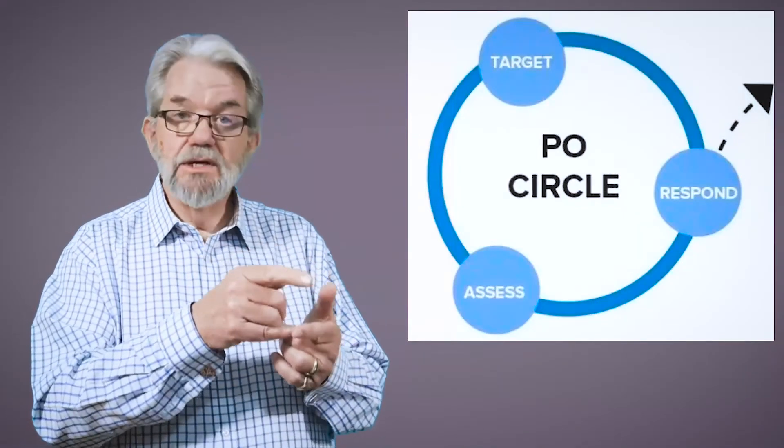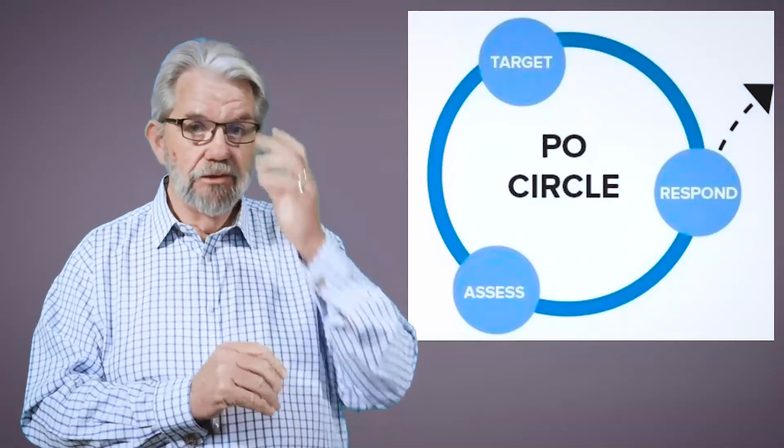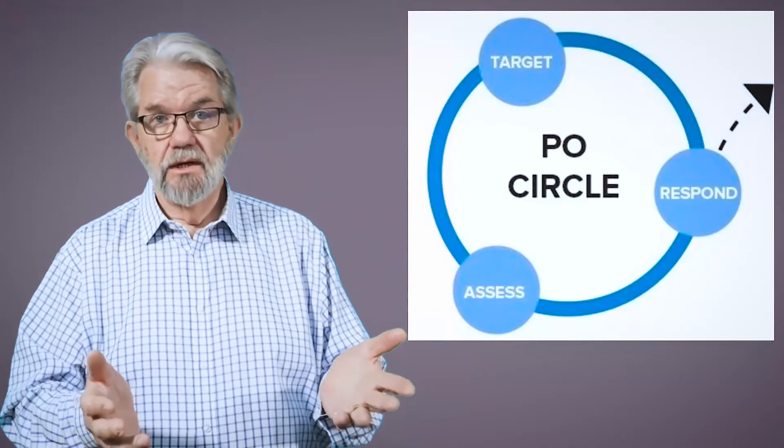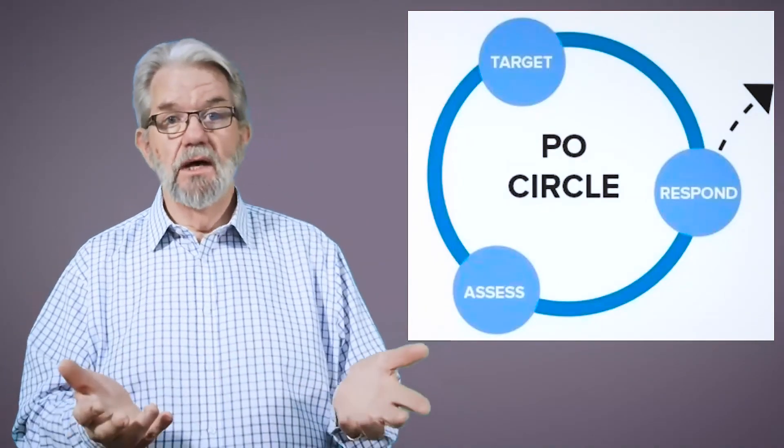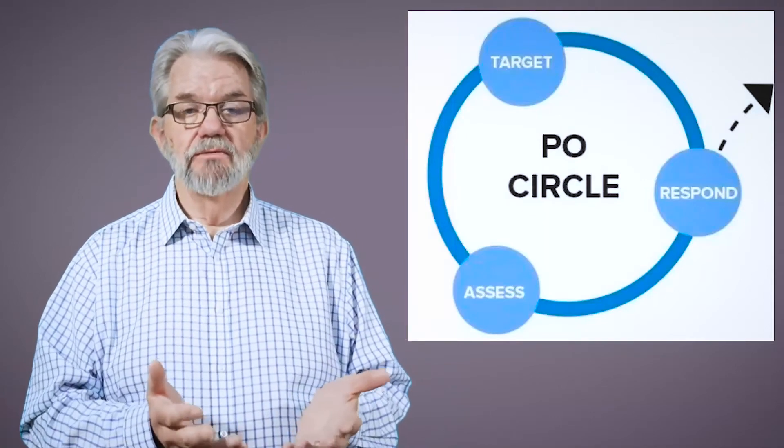So we've got some KPIs and targets. And then we'll come around to assess. And assess, we're going to do two things at assess. Firstly, we're going to assess the performance numbers, of course. You know, the target's 9 out of 10. And, you know, is it 9 out of 10? Or is it 8 out of 10? Or is it 9 and a half out of 10? We'll assess the performance, the numbers, the objective assessment.